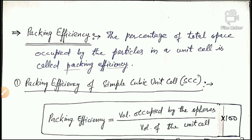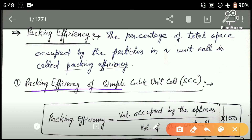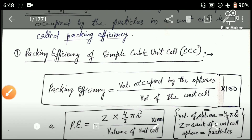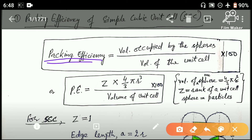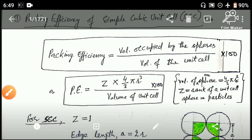Packing efficiency of simple cubic unit cell calculate करेंगे। Formula क्या होता है: packing efficiency is equal to volume occupied by the spheres upon total volume of the unit cell, multiplied by 100. यह percentage निकाल देगी कि एक unit cell में sphere ने कितनी जगह cover की है।